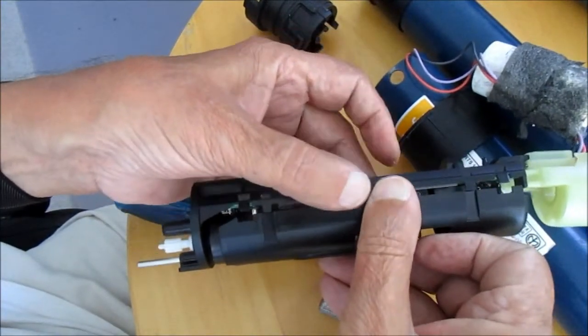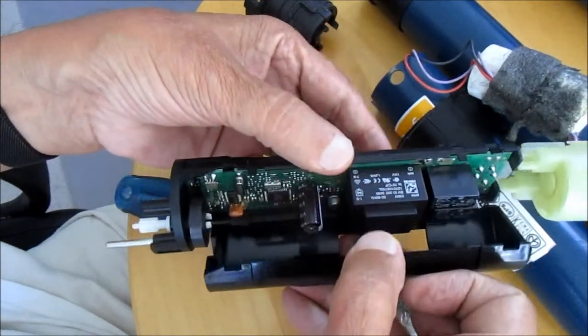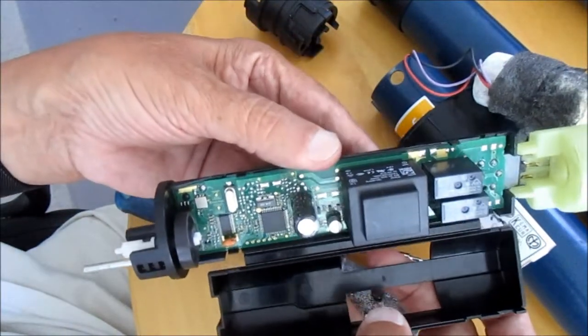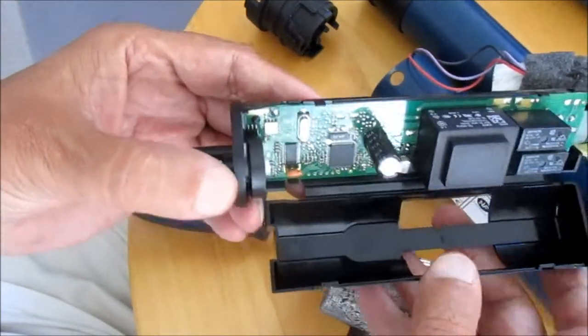So here we go. There's two little clips, one here and one here. And that is what holds the cover over the electronic circuit board, the printed circuit board. And that's the board.